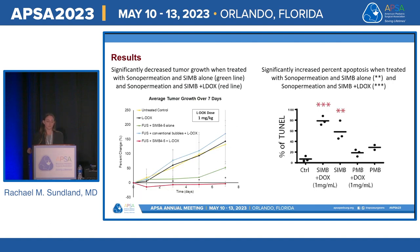Sono-permeation with size-isolated micro-bubbles alone decreased tumor cell growth, shown in the green line. This decrease was amplified in the presence of L-DOX, shown in the red line. This correlated with increased tumor cell apoptosis — percentage of tunnel positivity — which was significantly increased using size-isolated micro-bubbles alone and appears to work synergistically with L-DOX. This increase in apoptosis was not seen with polydispersed micro-bubbles.